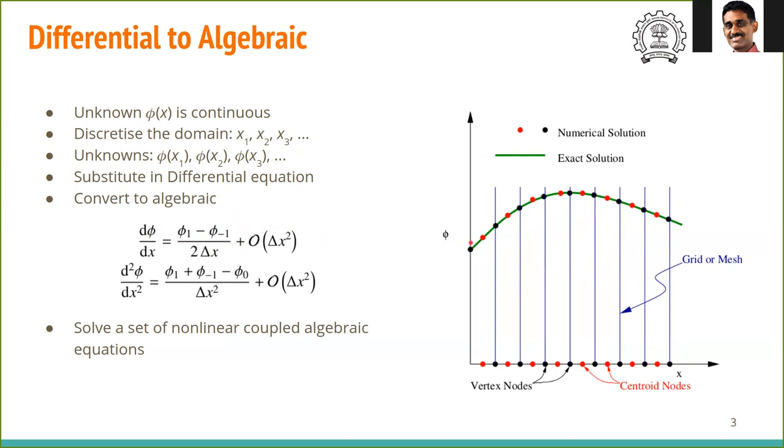First, let's say the green curve φ is some variable - it could be temperature, velocity, or concentration. φ varies with distance along x. We're considering 1D to make this clear. If we solve it exactly, we'd get this green line. Our approach in numerical methods is to not necessarily get this entire continuous function, but to identify specific locations along x - these red and black dots. The black dots are vertex nodes and the red dots in between are centroid nodes.